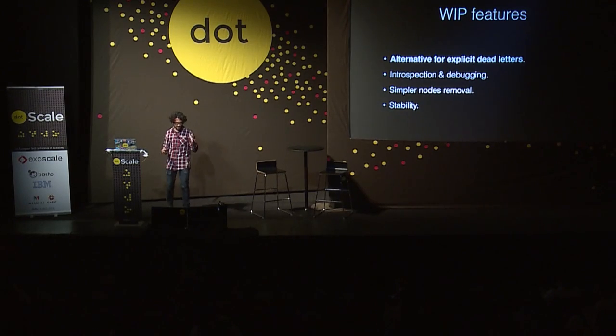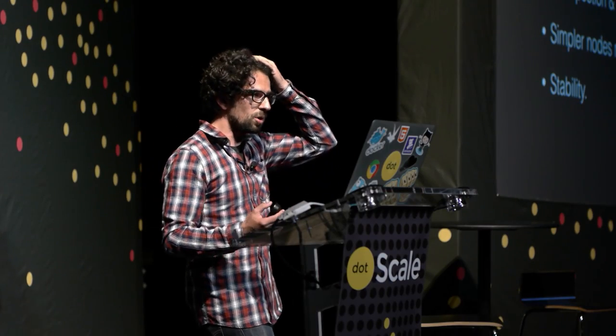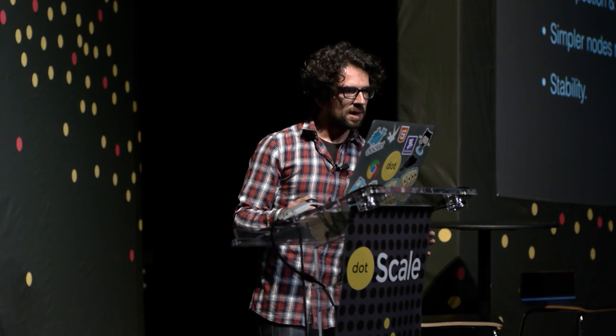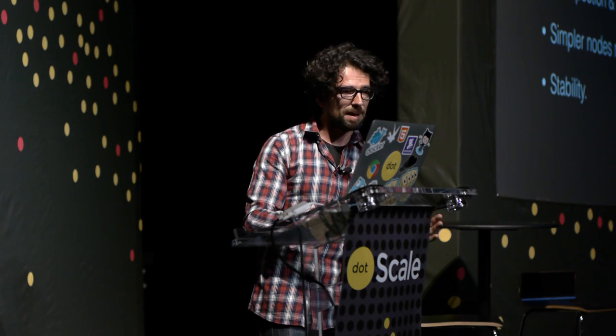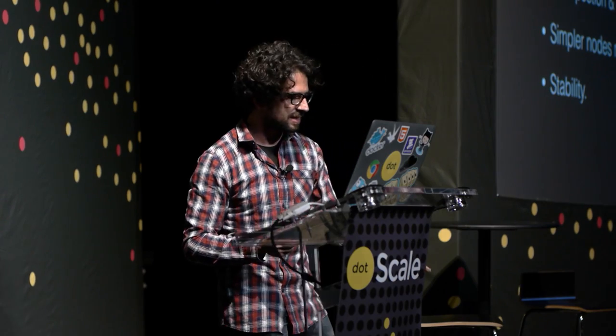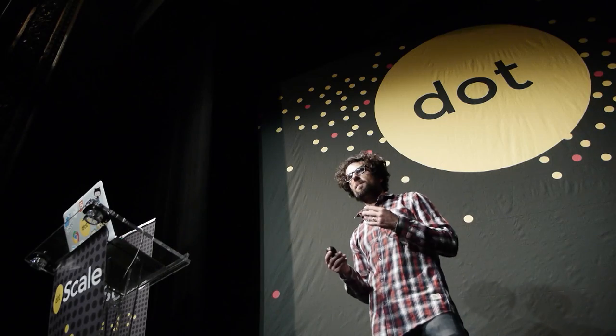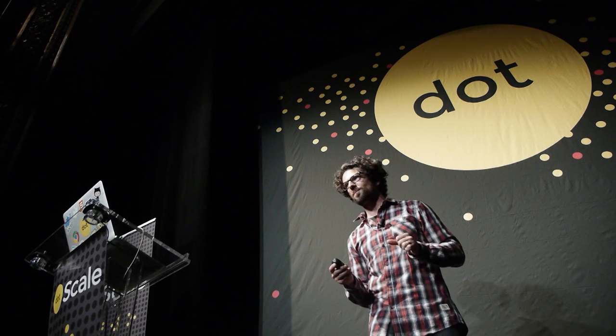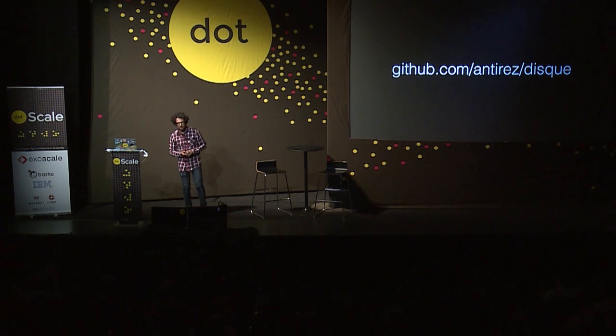More introspection and cluster facilities to remove nodes are also planned. When removing a node, I want it to stay quiet — just serving the content it has, no longer accepting new messages — and when finally empty, remove it. Of course more stability is needed, because the system is very new. This is the project homepage, and I'll be glad to answer any questions if you give it a try. Thank you for listening.